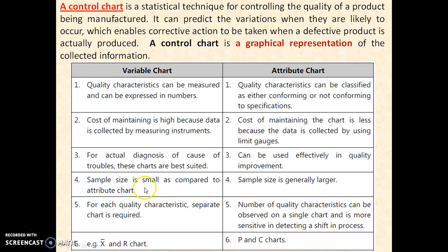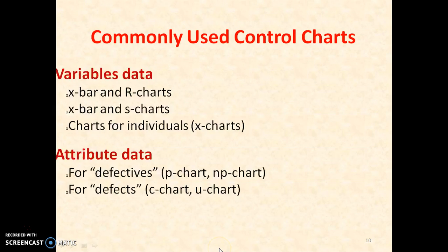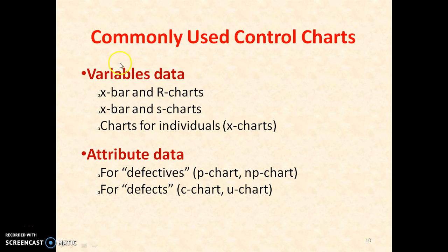Sample size for variable chart plotting is small, whereas for attribute charts it requires a large size of data. Variable data is used for plotting X-bar and R charts, or individual X charts. Attribute data can be used to plot P chart and NP chart for number of defectives, and C chart and U chart for defects in numbers.